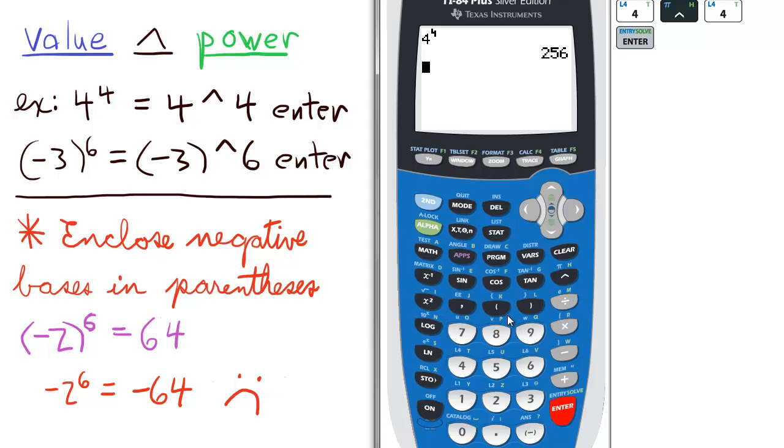If we use negatives, we want to enclose the negative bases in parentheses. So negative 3 raised to the 6th, enter. And that's how we do it.